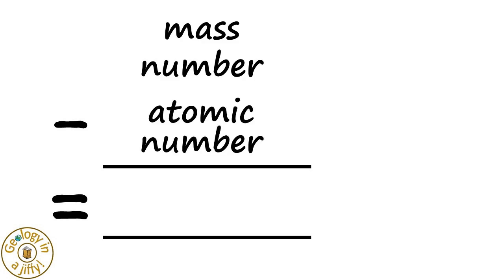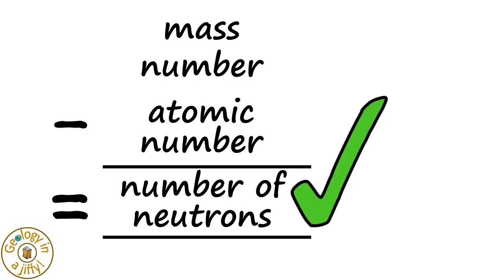Or, alternatively, if we start with the mass number, then subtract the atomic number, we can then calculate the number of neutrons in the nucleus.